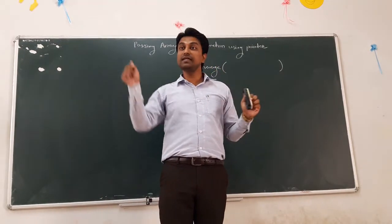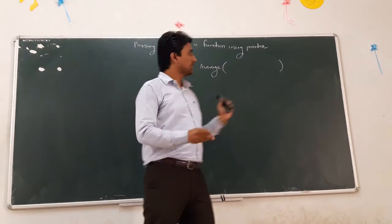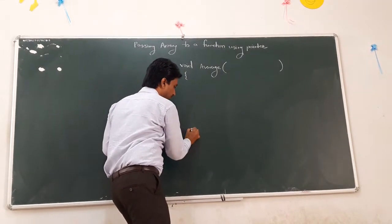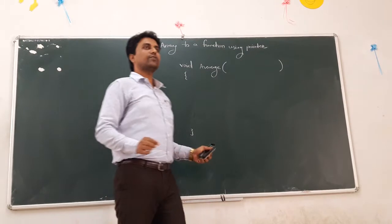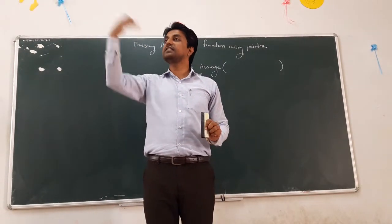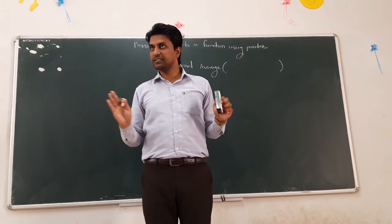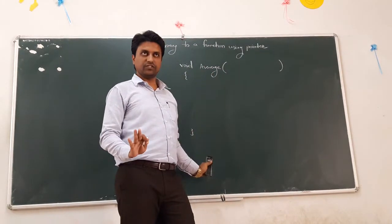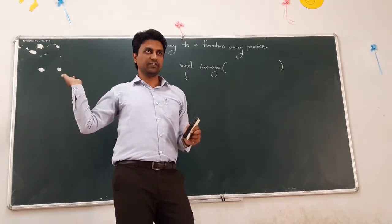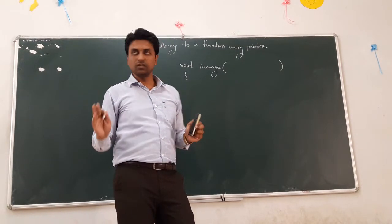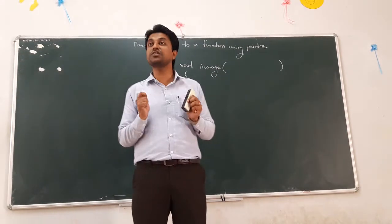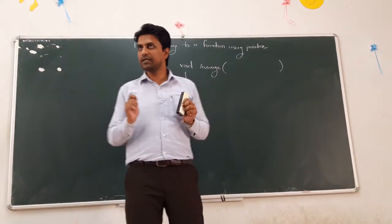We have to decide how to pass the total array. After that, inside the average function body — indicated by curly braces — we have to display whatever may be the average of the elements in the array. That is the task of the average function. It does not return anything to the calling function. This is the simple structure of the average function.